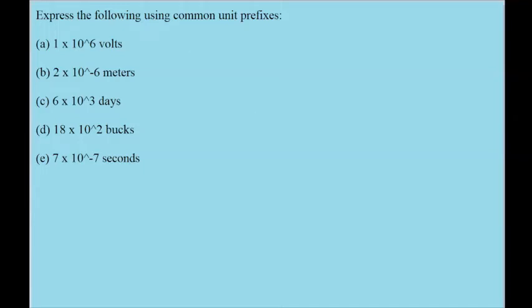This problem gives us various quantities in scientific notation — we know it's scientific notation when it has the times 10 to the something power. The problem asks us to rewrite each of these values using unit prefixes, like mega, micro, nano — the things you say before the main part of a unit. The trick is to know which prefix corresponds to which exponent. You don't have to remember all of them necessarily; you might have a chart on hand, but it is useful to know them.